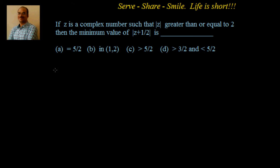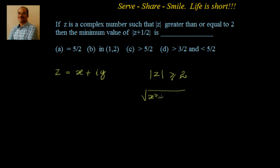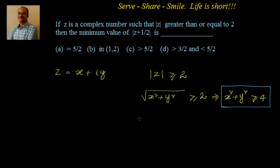z is a complex number, so let us say z is equal to x plus i·y. We have been given that the modulus of z is greater than or equal to 2. We know that the modulus of z is nothing but the square root of x² plus y², which is greater than or equal to 2. Squaring both sides, we get x² plus y² is greater than or equal to 4.